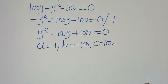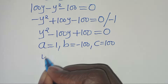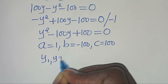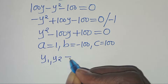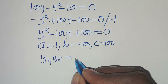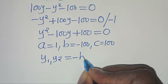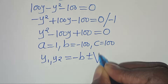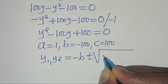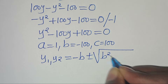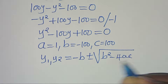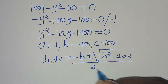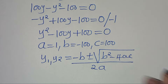The next step is to solve for y1 and y2 by applying the quadratic formula: minus b plus or minus the square root of b squared minus 4ac, everything divided by 2a.